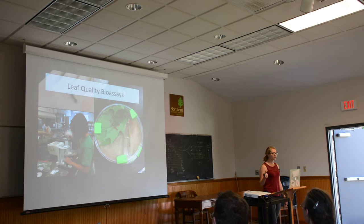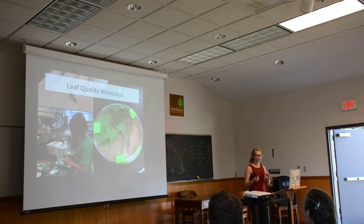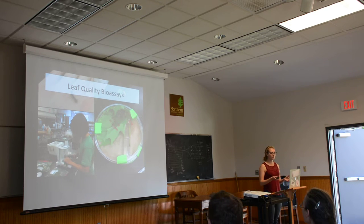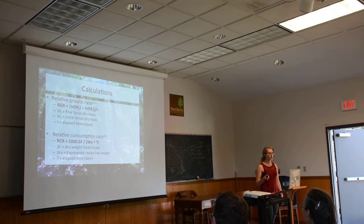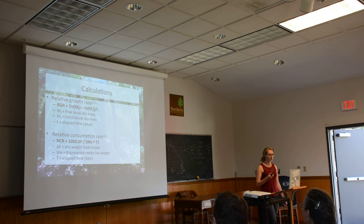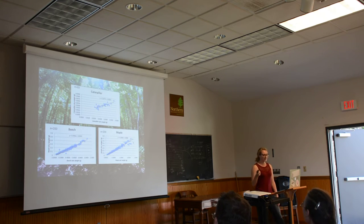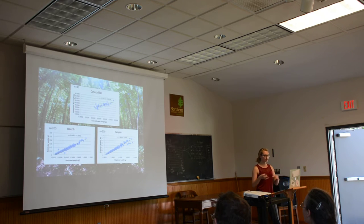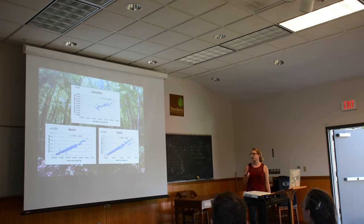Back in the lab in Syracuse, we ran leaf quality bioassays where we took tissue culture dishes and put either beech leaves or sugar maple leaves in the dish, then put the caterpillar in, sealed it up, and placed them in an incubation chamber for 72 hours. From those assays, I was able to calculate relative growth rate and relative consumption rate. For growth rate, I needed initial and final larval dry mass. For consumption rate, I needed initial and final leaf dry mass. To get the dry mass of a live caterpillar, we had a subset of 33 caterpillars for which we took the wet weight before and then dried them for the dry weight after. That gave us a conversion factor to convert initial wet weight to dry weight, and we did the same thing with the beech and maple leaves.